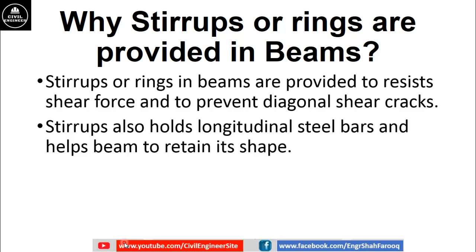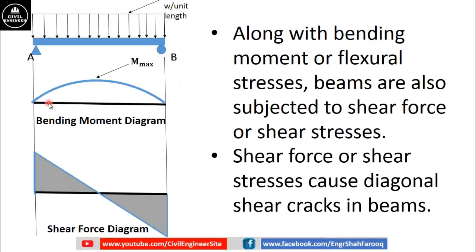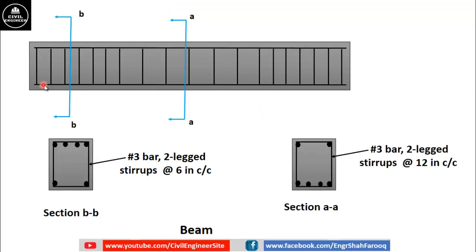Stirrups also hold longitudinal steel bars and help the beam retain its shape. Stirrups also help in preventing longitudinal bars from bending outwards. As we know, beams are subjected to bending moment, and due to this the top fiber of the beam will be in compression and the bottom fiber will be in tension. The bottom reinforcement is likely to bend out from the beam, and these rings or transverse reinforcement also help in preventing longitudinal bars from bending outward.